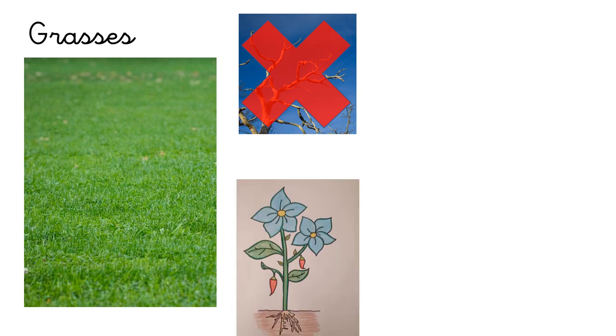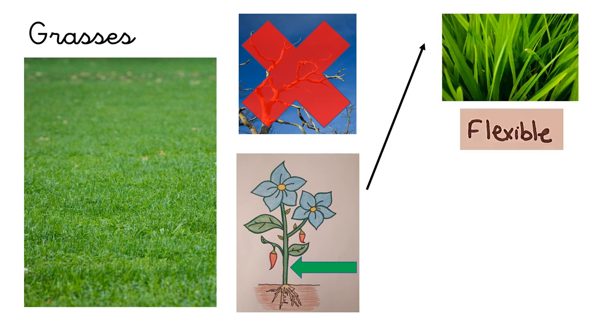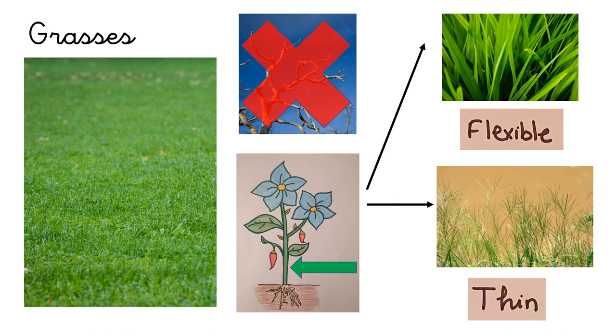First, grasses. Grasses haven't got branches, but grasses have got a stem, and their stem is flexible, you can bend it, and thin, super small.